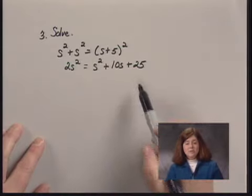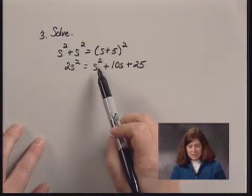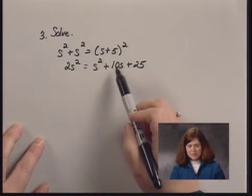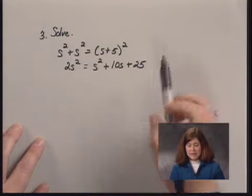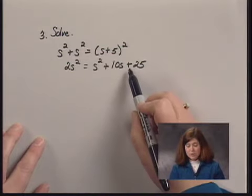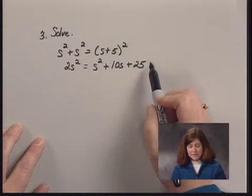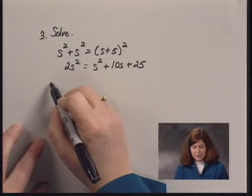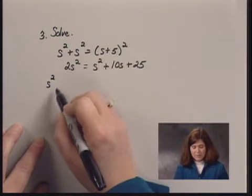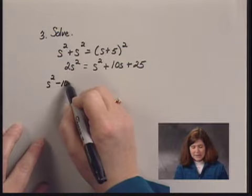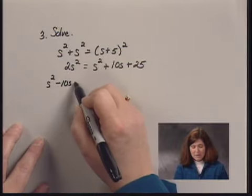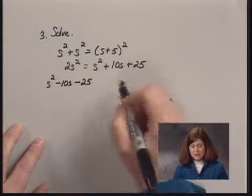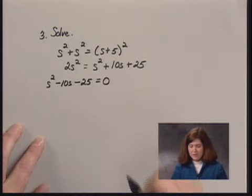I want to get zero on one side, so I subtract S squared, 10S, and 25 from both sides. 2S squared minus S squared gives me S squared, then I have minus 10S minus 25 equals zero on the right side.